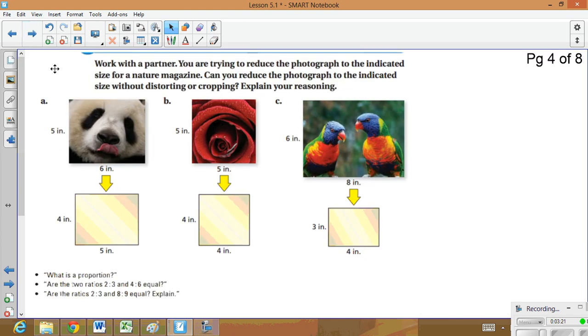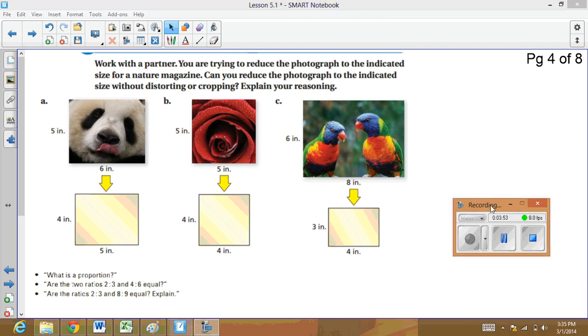Okay, so what I'd like you to do is take a look at these three examples. What you're going to do is we're going to try to reduce the photograph to indicate the size for the magazine. Meaning if I want to put this picture of the panda in a magazine and I only have a 4x5 square or rectangle. Or I have a 5x5 rose, could I fit that into a 4x4 and will it remain proportional? And if I have a 6x8, could I fit it into a 3x4 and will that remain proportional? So what you're going to do is pause the video here, answer the questions, and then hit play for the solutions.